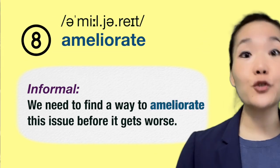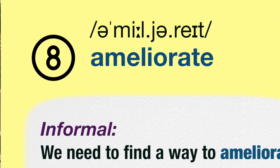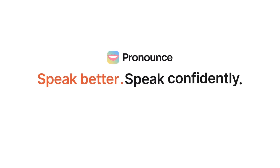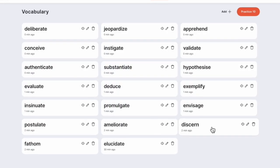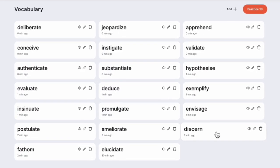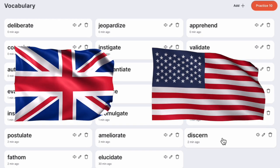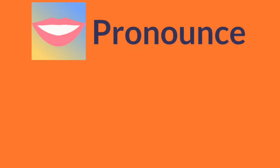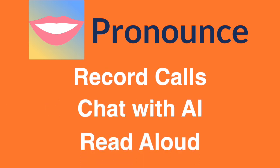Before we dive into the next advanced verb, you might have noticed I've included phonetic transcriptions for the verbs today. It's important to practice sounding out new words accurately, which is why I want to quickly mention Pronouns. Pronouns is an AI-powered tool that helps you improve your pronunciation, grammar, and fluency. You can input any word like the verbs from today's lesson, and Pronouns will guide you in either a British or American accent with instant feedback. Pronouns offers several ways to help you practice.